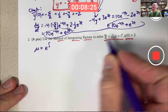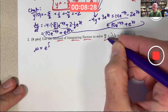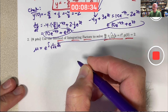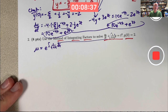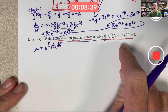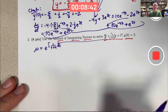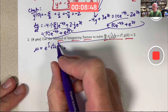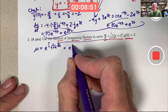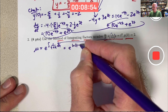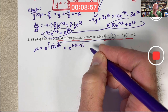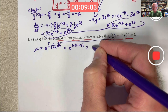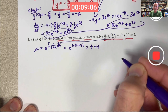The integrating factor, called mu, is e to the integral of whatever function is in front of y. We figure out the integrating factor, then multiply both sides of the differential equation by it. What happens, almost as if by magic, is the left-hand side becomes easy to integrate. The integral of 1 over t plus 4 is natural log of t plus 4. You don't need to bother with the absolute value signs or the plus c — you could effectively take c to be 0. Then e to the natural log of t plus 4 simplifies to t plus 4. That is the integrating factor.